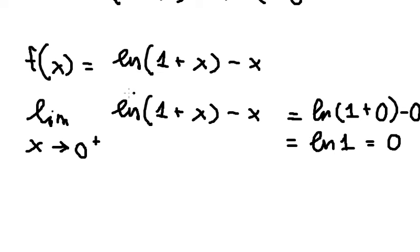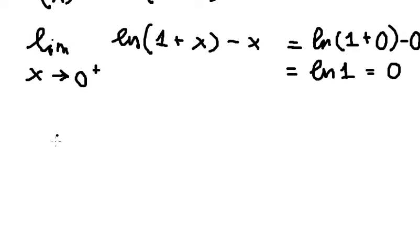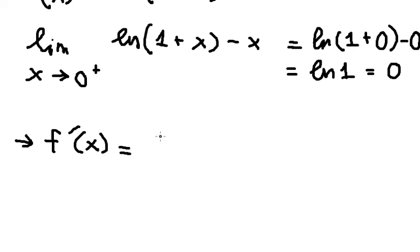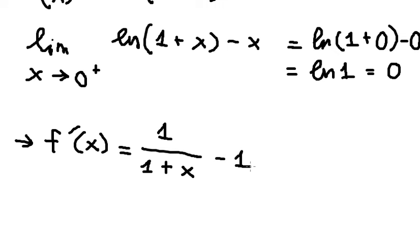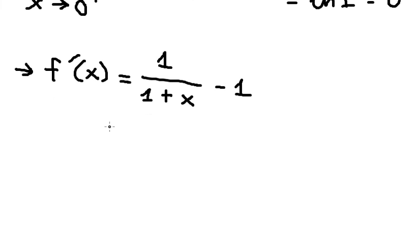Next, we need to find the first derivative of the function. So for this one, we have 1 over (1 + x). And this one gives negative 1. Now we need to find the critical points.